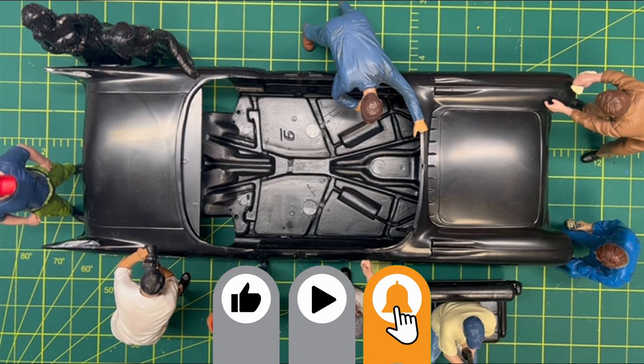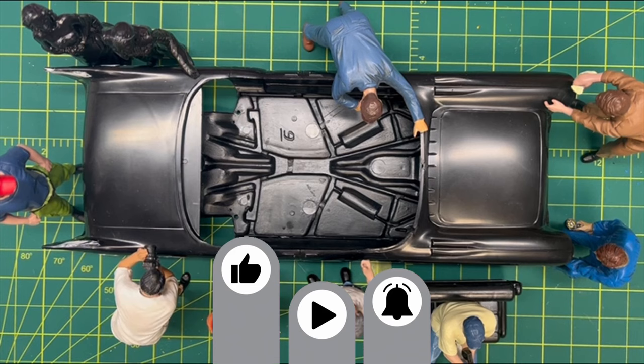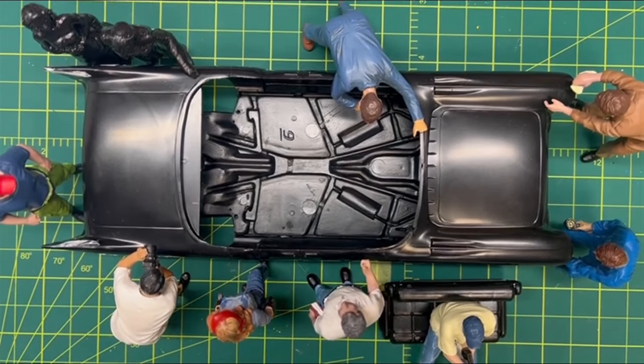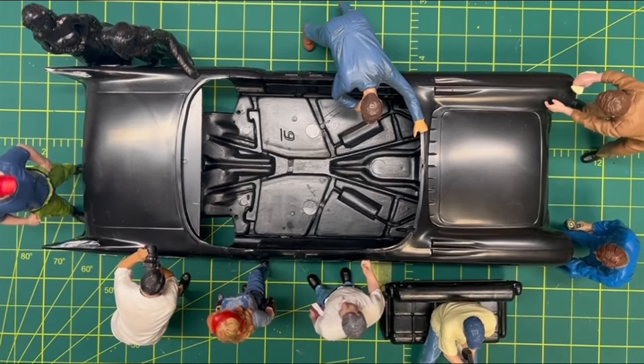This is the 1957 Revell Cadillac Eldorado Brougham, and boy oh boy, there is a lot to this little car for hardly having any parts.